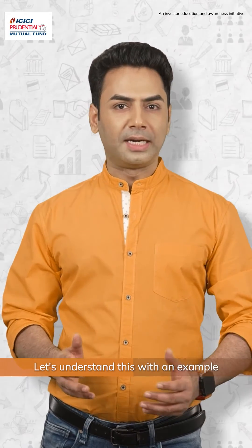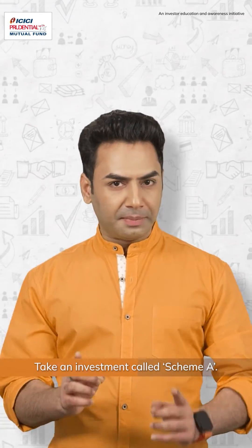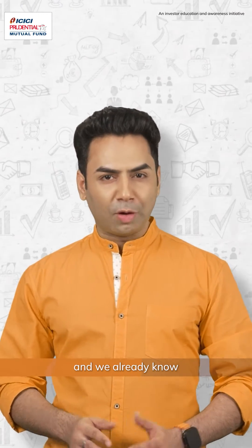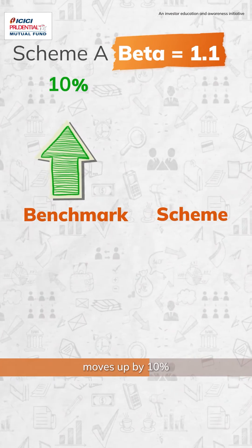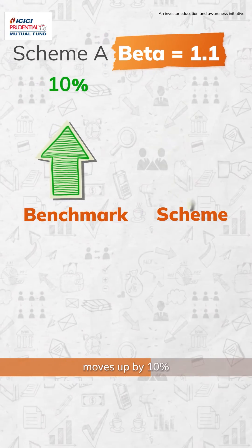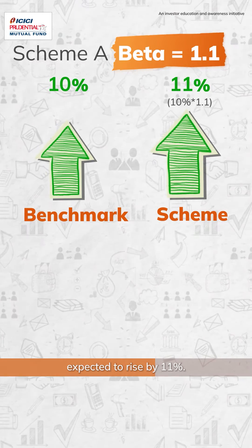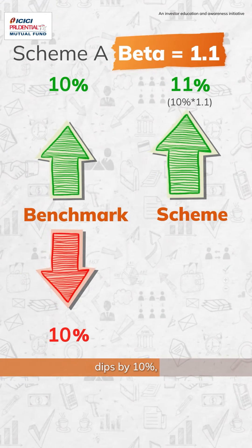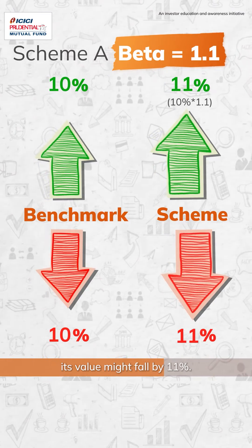Let's understand this with an example. Take an investment called Scheme A — its BETA is 1.1. We already know that the benchmark's BETA is always 1. This means that whenever the benchmark moves up by 10%, Scheme A's value is expected to rise by 11%. Conversely, if the benchmark dips by 10%, its value might fall by 11%.